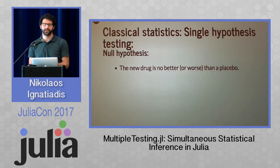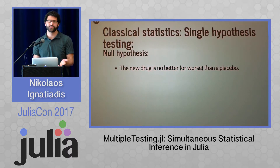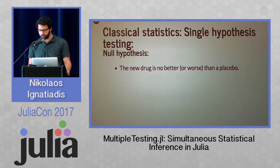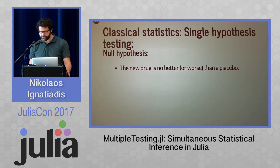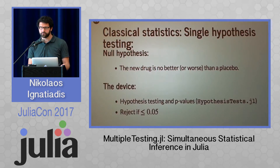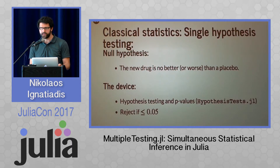Before we can talk about multiple testing, we will have to revisit classical statistics and single hypothesis testing. So here's how science often proceeds. A scientist might want to prove that a drug is better than a placebo for curing a disease. The initial stance is to assume a null hypothesis — basically that the drug is no better or worse than a placebo. The scientists gather data and try to use it to disprove the null hypothesis using hypothesis testing, and usually the statistic used is the so-called p-value.